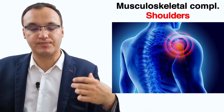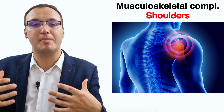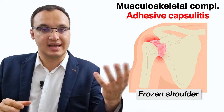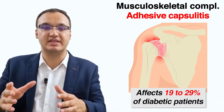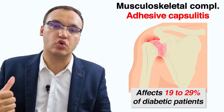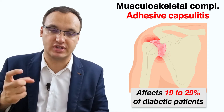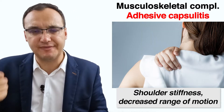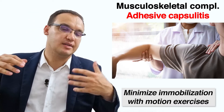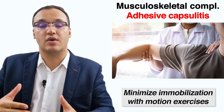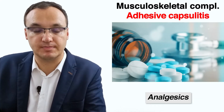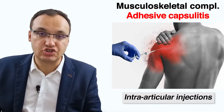Diabetes can also affect the shoulders. There are two main types of shoulder problems. The first is adhesive capsulitis, or frozen shoulder, seen in 19 to 29% of people with diabetes. This refers to a stiffened shoulder joint caused by a reversible contraction of the joint capsule, presenting with shoulder stiffness and decreased range of motion. Treatment is conservative: minimizing immobilization, exercise, pain medications, and intraarticular injections.